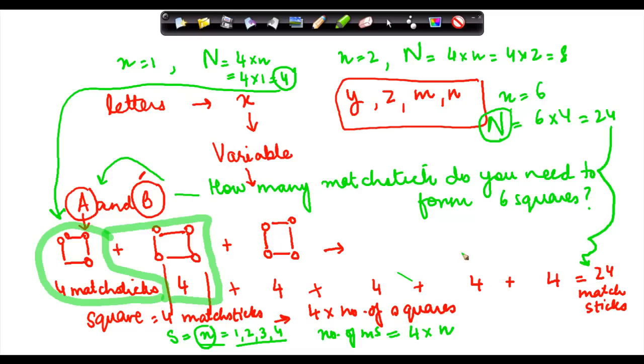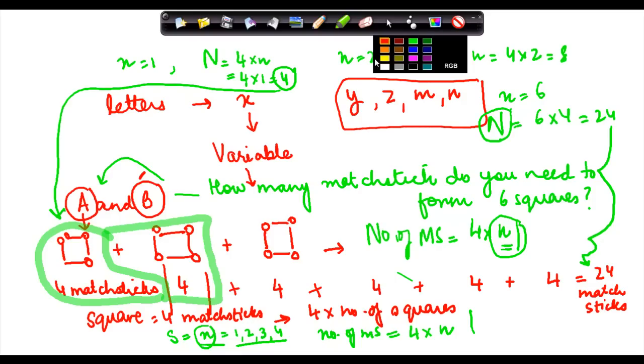So basically, then you have arrived at a very important rule here, which is that the number of matchsticks is equal to 4 into n. And n which can vary is the variable. The value of n is not fixed. n can have any value. And therefore, you can write the rule which is number of matchsticks is equal to 4 times the number of squares which are required. So these are basically the rules that you write in algebra, which are very important and which also kind of help you in solving complex problems.